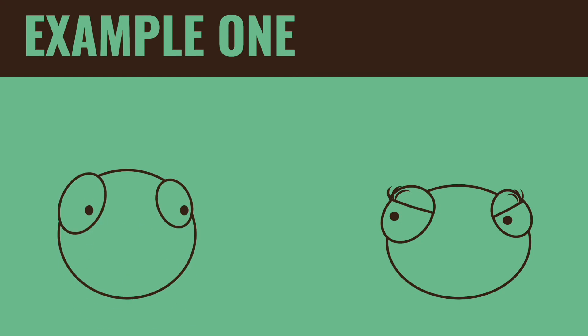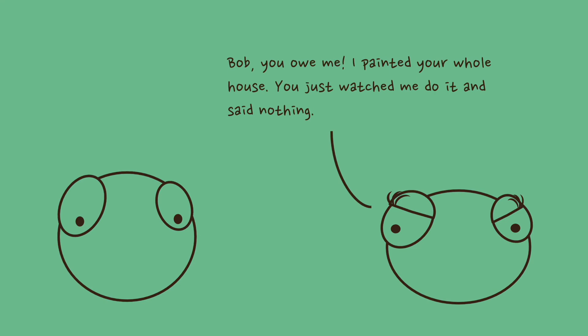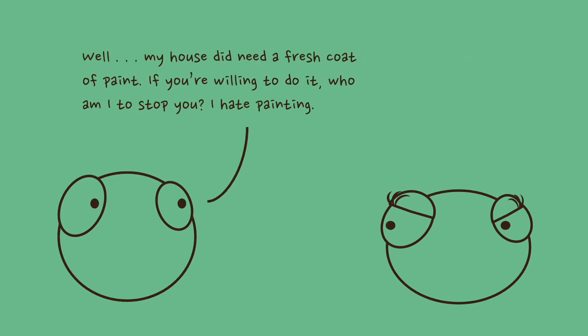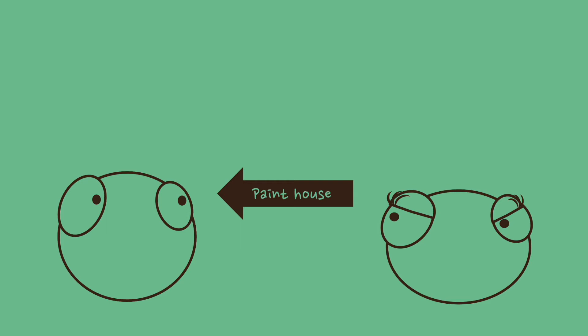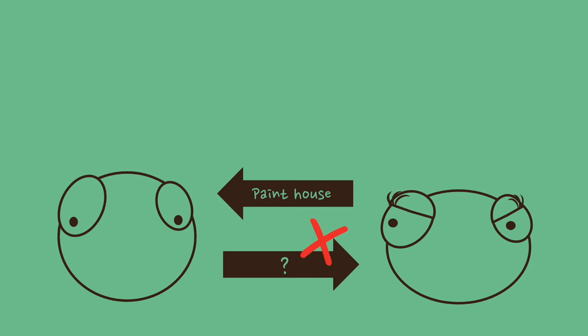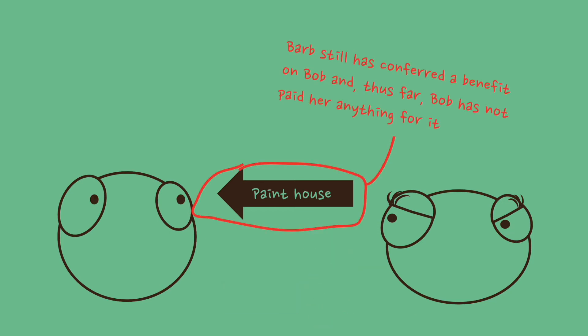Let's look at an example with Bob and Barb. Barb says, 'Bob, you owe me. I painted your whole house. You just watched me do it and said nothing.' Bob replies, 'Well, my house did need a fresh coat of paint. If you're willing to do it, who am I to stop you? I hate painting.' There isn't a promise coming from Barb, but there is a benefit bestowed from Barb to Bob — the painting of his house. We have to ask: did Bob give anything in return? Was there consideration for Barb's performance? Was it part of a contract or exchange? The answer is no — nothing was coming back. It's just a benefit bestowed, not part of a contract or an exchange. There's no consideration for her performance.